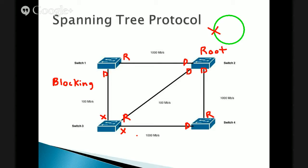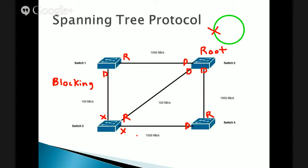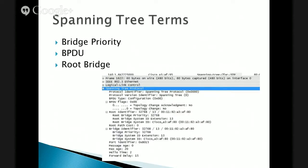Those ports remain in the blocking state, and that's what prevents loops in the environment. All of this happens automatically — you don't have to worry about it. If you have all managed switches, you might have created loops and never realized it because spanning tree prevented the actual creation of the loop. Those ports that would cause the loop just remain in blocking state, and spanning tree continues to work on your behalf. If a designated port gets removed, a new port will become a designated port. This is a dynamic process going on all the time on your network.